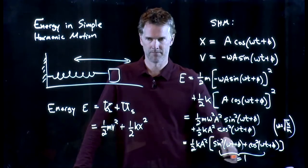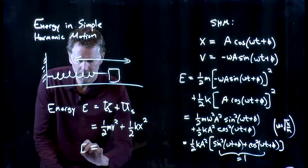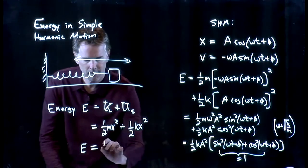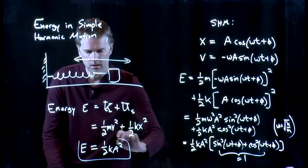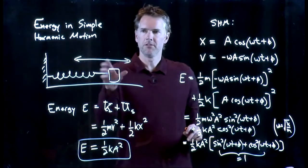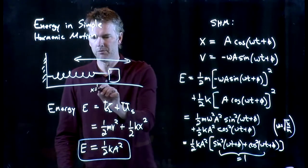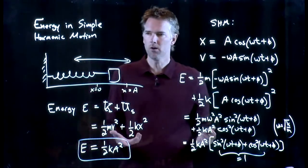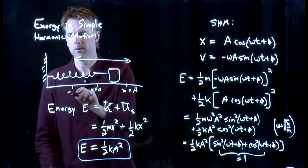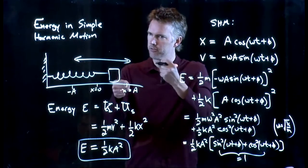And so look, the total energy, what does it simplify to? One-half k A squared. That's it. That's the total energy in the system. However far you stretch this thing out from x equals zero to x equals A, and you let it go, that determines how much energy is in the system. At full stretch, it's all that.